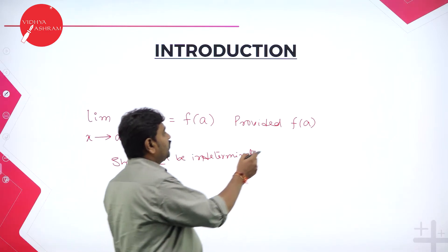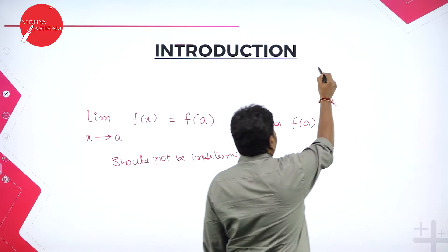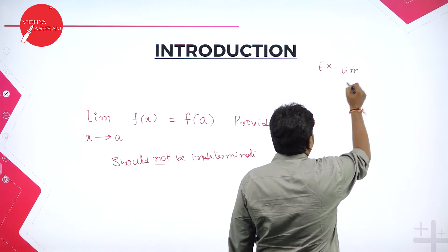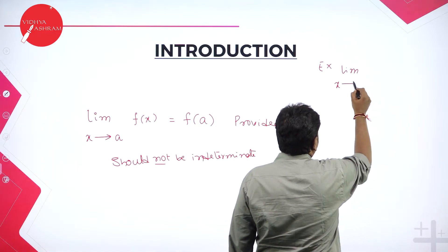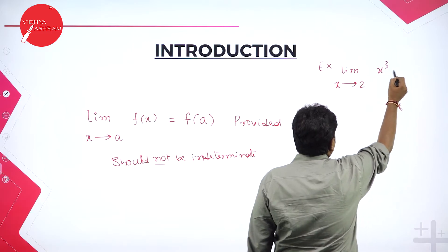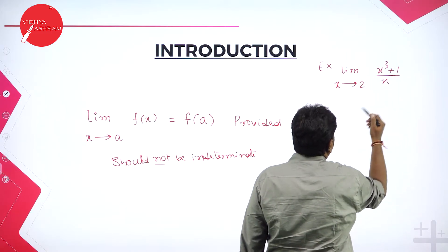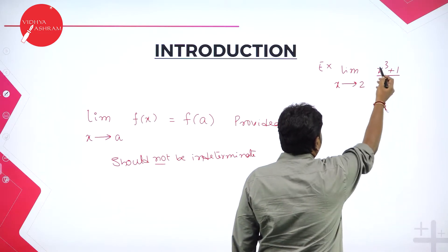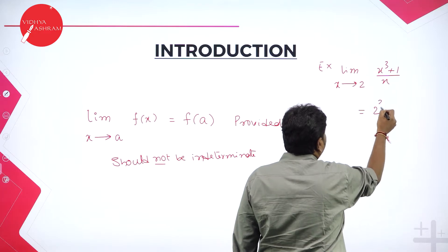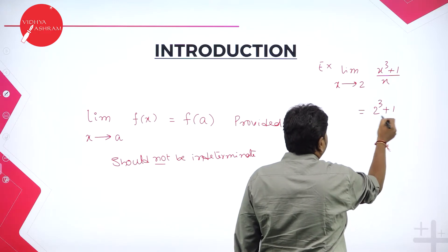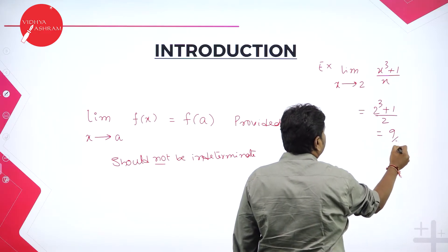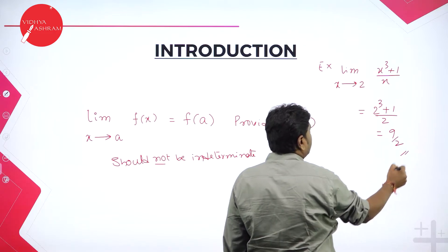For example, if I take limit x tends to 2, x cube plus 1 divided by x. Means in the place of x, put 2. So it will become 2 cube plus 1 by 2. That is 8 plus 1, so 9 by 2.